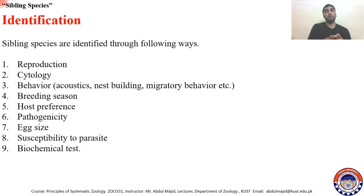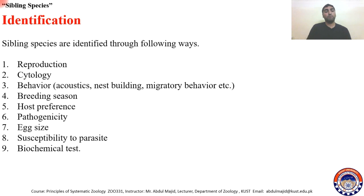In the case of birds that look morphologically similar, you can look at their nest-building behavior, migratory behavior, and breeding season. For parasites, you can use host preferences — which species prefer which host — and pathogenicity. You can also look at susceptibility to parasites, and do chemical tests. There are many ways by which you can identify sibling species. For example, for the mosquito species complex that causes malaria, pathogenicity and excise susceptibility to parasites can be used.